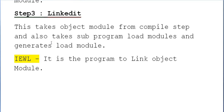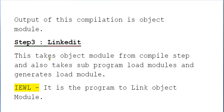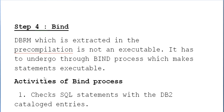Step three is link edit. This takes the object module from the compile step, along with sub-program load modules, and generates a load module. The utility used to link the object module is IEWL. As shown in the diagram, the pre-compiler divides output into DBRM and modified source, and at the end you link edit — combining the object programs and DBRM together.